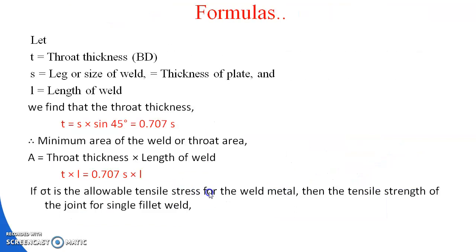The notation used: t = throat thickness, s = leg size or thickness of the weld, l = length of the weld. The throat thickness is t = s × sin 45° = 0.707s. The minimum area of the weld, or throat area, is: A = throat thickness × length of weld = t × l = 0.707 × s × l.